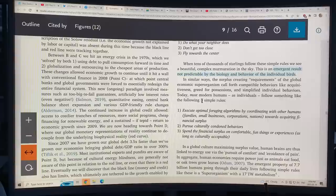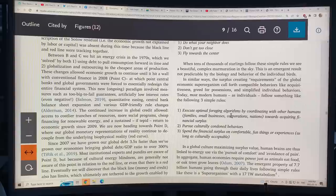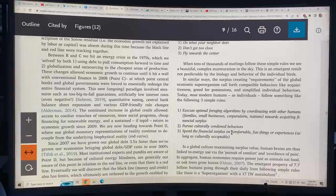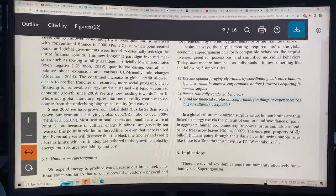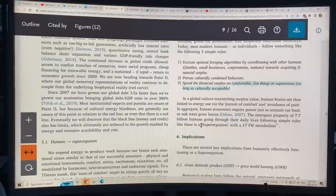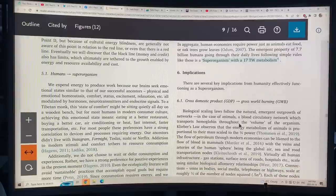So most modern humans, as individuals, we follow three simple rules. Execute optimal foraging algorithms. Coordinate with other humans, families, small businesses, corporations, nations towards acquiring financial surplus. Pursue culturally condoned behaviors. Spend the financial surplus on comfortable fun things or experiences, as long as they're culturally acceptable. This is the emergent property of the eight billion people now going through their daily lives is a super organism with a 17 terawatt metabolism and gross domestic product, always trying to get growth, growth, growth.